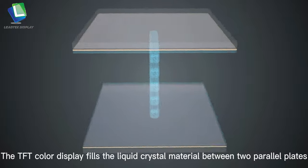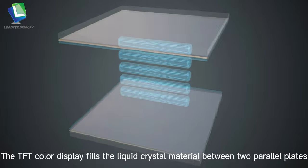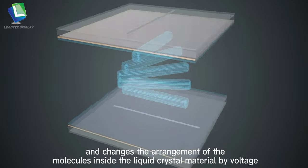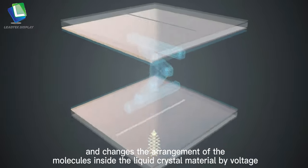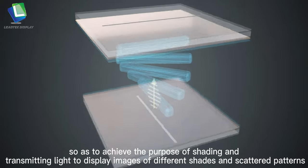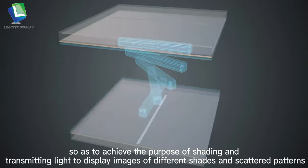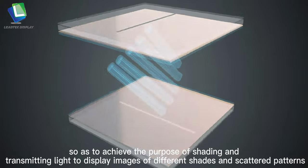The TFT color display fills liquid crystal material between two parallel plates and changes the arrangement of the molecules inside the liquid crystal material by voltage, so as to achieve the purpose of shading and transmitting light to display images of different shades and patterns.